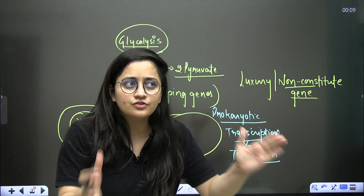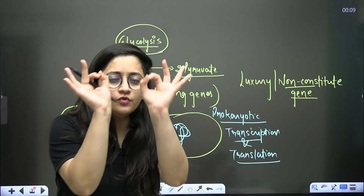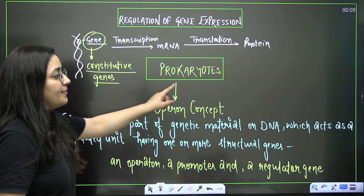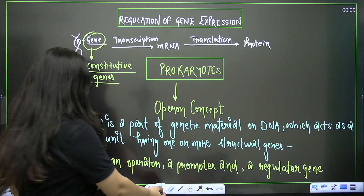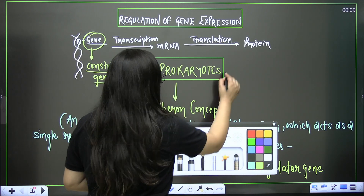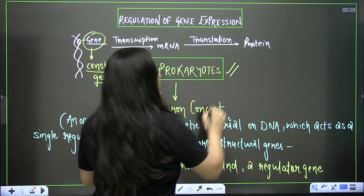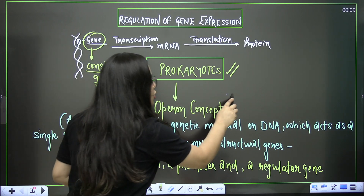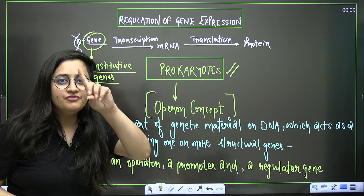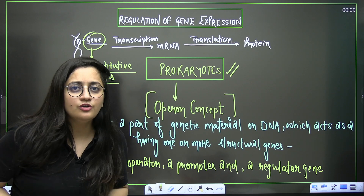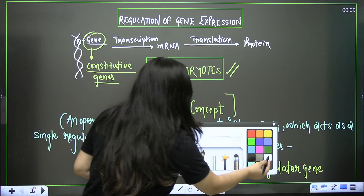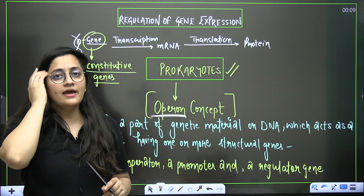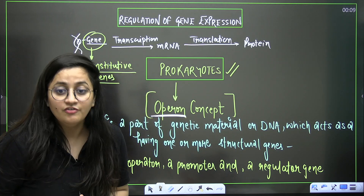In prokaryotes, for regulating gene expression, we have the operon concept. An important first point: the concept of the operon is not found in eukaryotes — it is only present in prokaryotes.